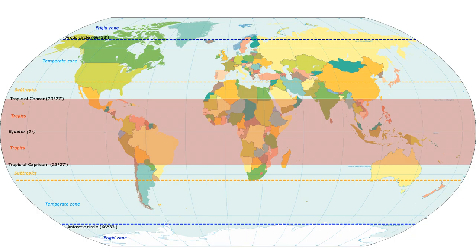The tropics comprise 40% of the Earth's surface area and contain 36% of the Earth's landmass. As of 2014, the region is home to 40% of the world population, and this figure is projected to reach 50% by the late 2030s.